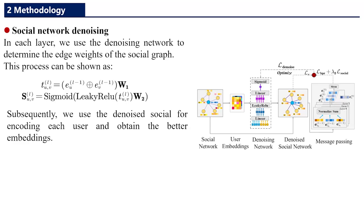For social network denoising, in each layer, we use the denoising network to determine the edge weights of the social graph. Subsequently, we use the denoised social graph for encoding each user and obtain better embeddings.